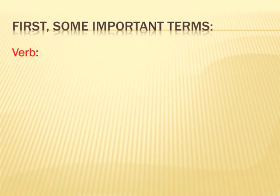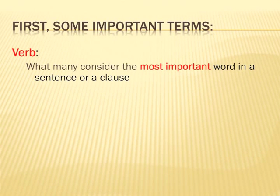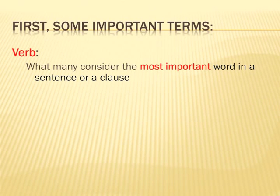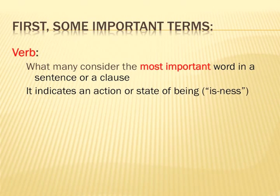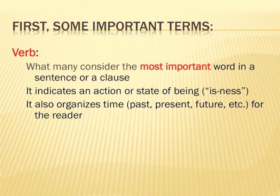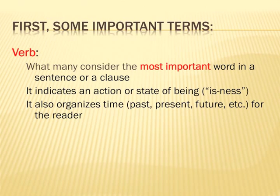The first word is verb. The verb is what many consider the most important word in any sentence or clause. It's the one the sentence revolves around — the center of the action, the center of the existence of what's happening in the sentence. It indicates an action or a state of being, a state of is-ness. It also organizes time for the reader: past, present, future.